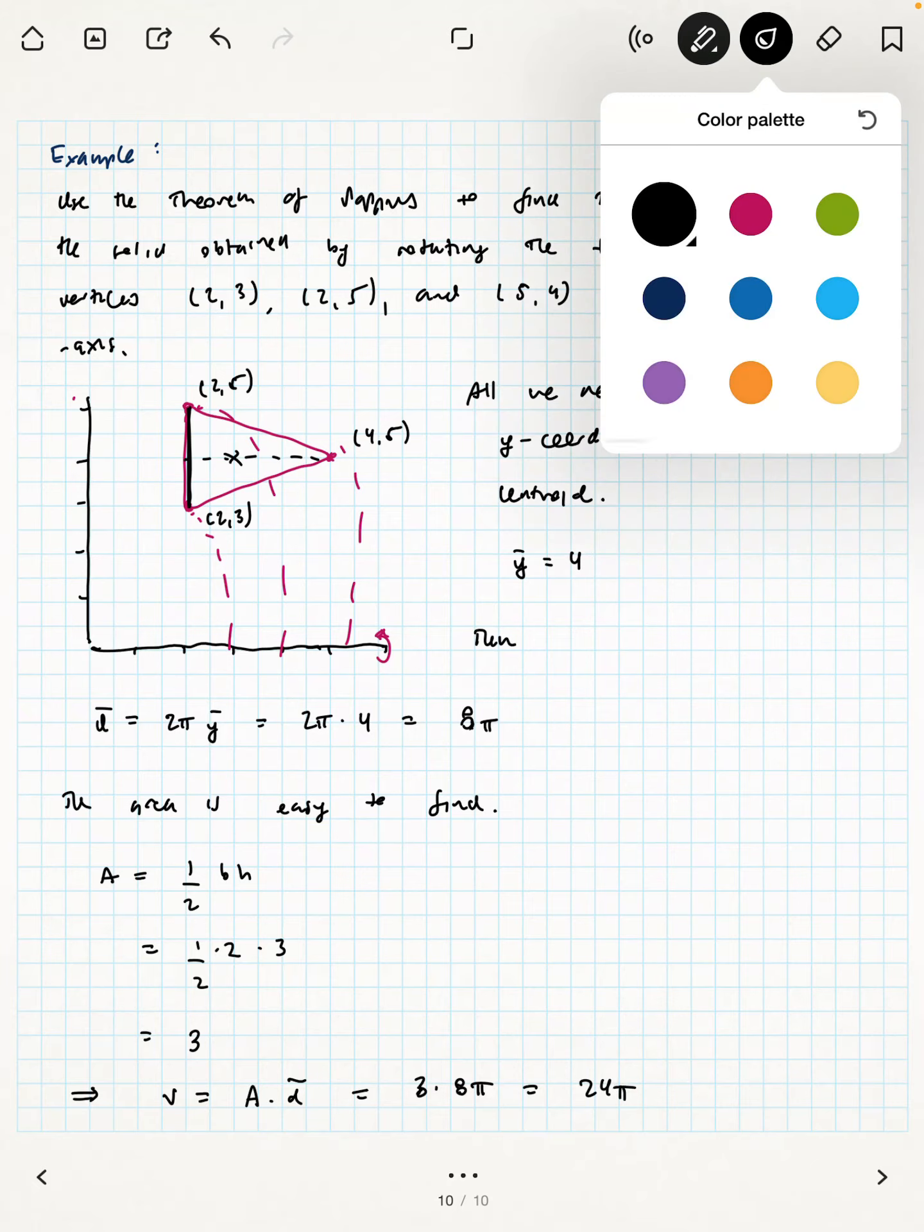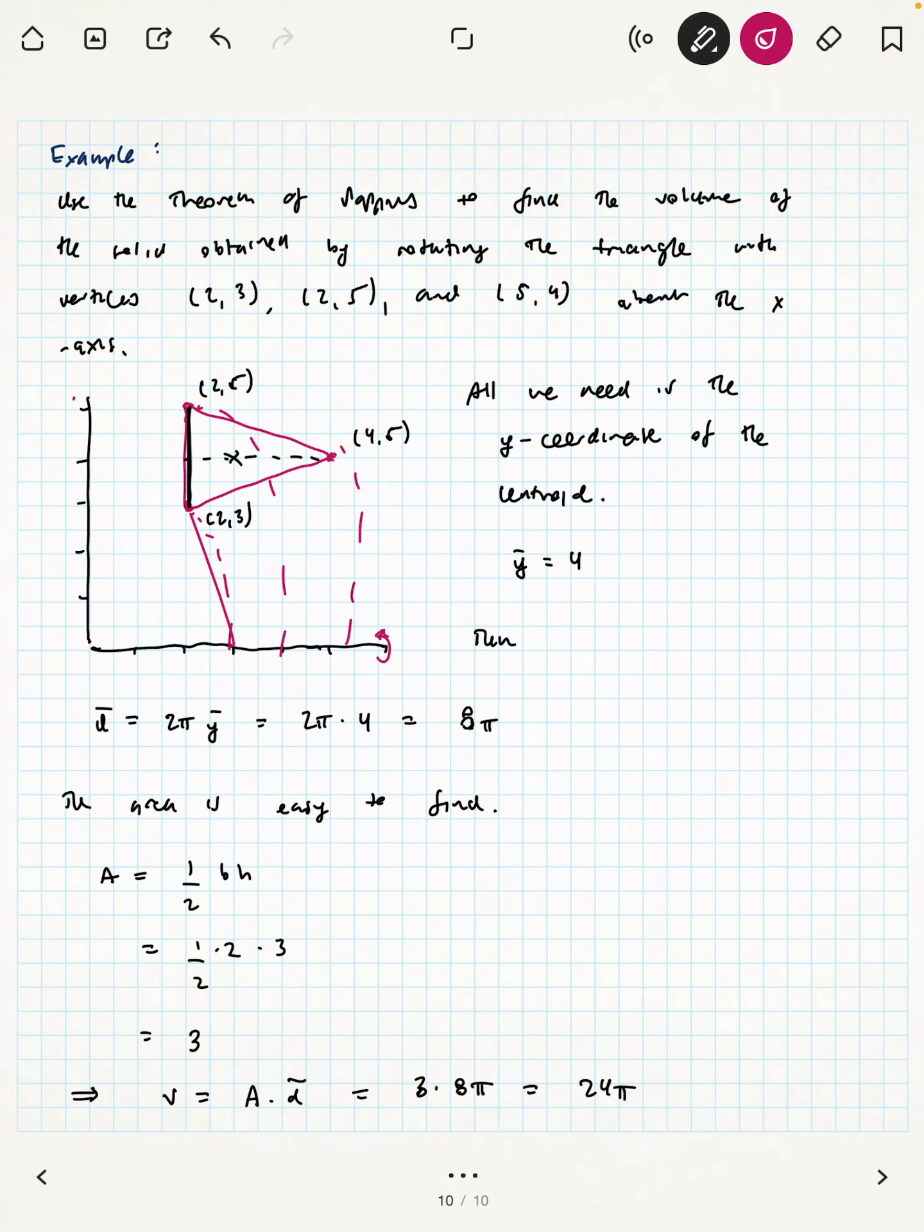And so that means the area times the distance traveled by the centroid is 3 times 8π, or 24π. That's the volume.